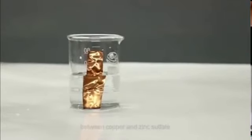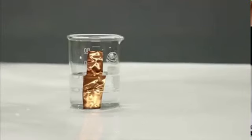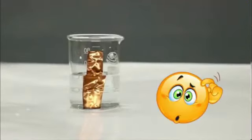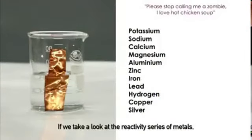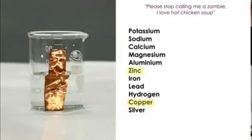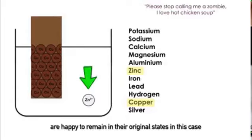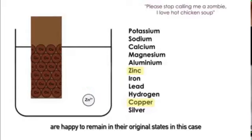Why is this so? Let's check the reactivity series. We know that copper is less reactive than zinc. Thus, both copper atoms and zinc ions are happy to remain in their original state in this case. That means the less reactive copper can't replace the more reactive zinc from its solution.